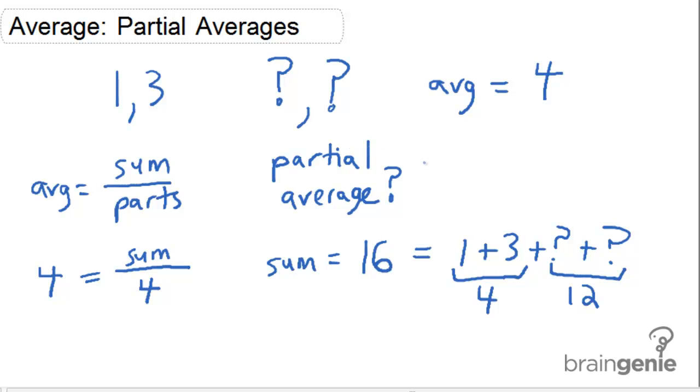So this partial average is going to be equal to the sum of 12 divided by the two parts, because there's two numbers, and our final answer will be six. That's how to find a partial average.